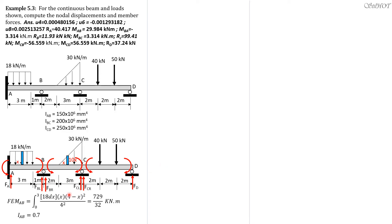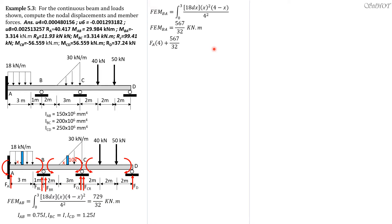By the way, IAB is 0.75 of IBC, our IBC is our reference I, and ICD is 1.25 I. For fixed-end moment BA, we use the same integral, interchanging the squared terms — x squared and (4 minus x) over 4 squared — giving 567 over 32. Then for fixed-end moment BC: summation of moments at B equals 0 to solve for FA. FA times 4 plus 567 over 32 equals 729 over 32 plus the moment of the load 18 times 3 times 2.5. So FA equals 2241 over 64 kilonewtons.